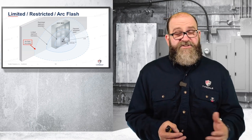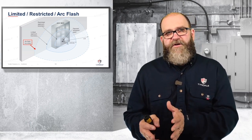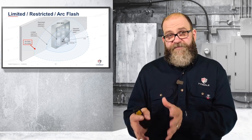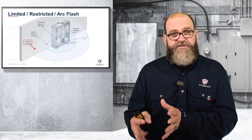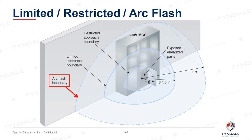Just to refresh: your restricted approach boundary is fixed at the voltage level you're working on, and it's for you as a qualified individual. A limited approach is a fixed level boundary based on the voltage level, and then you've got your arc flash boundary again, which can be completely variable.